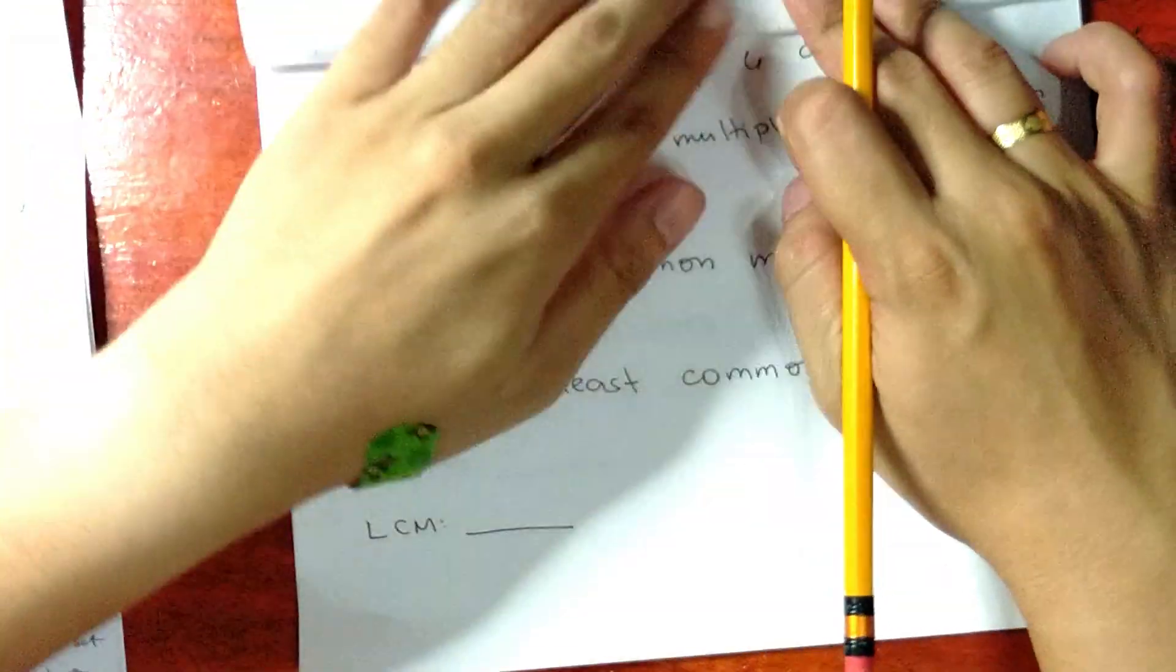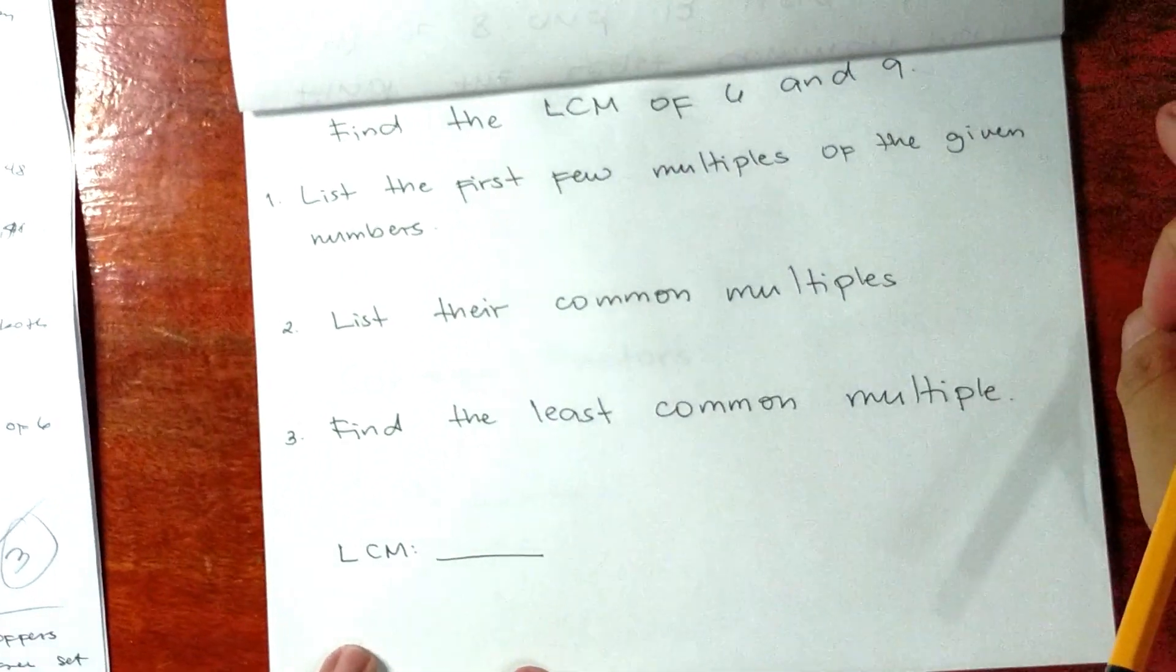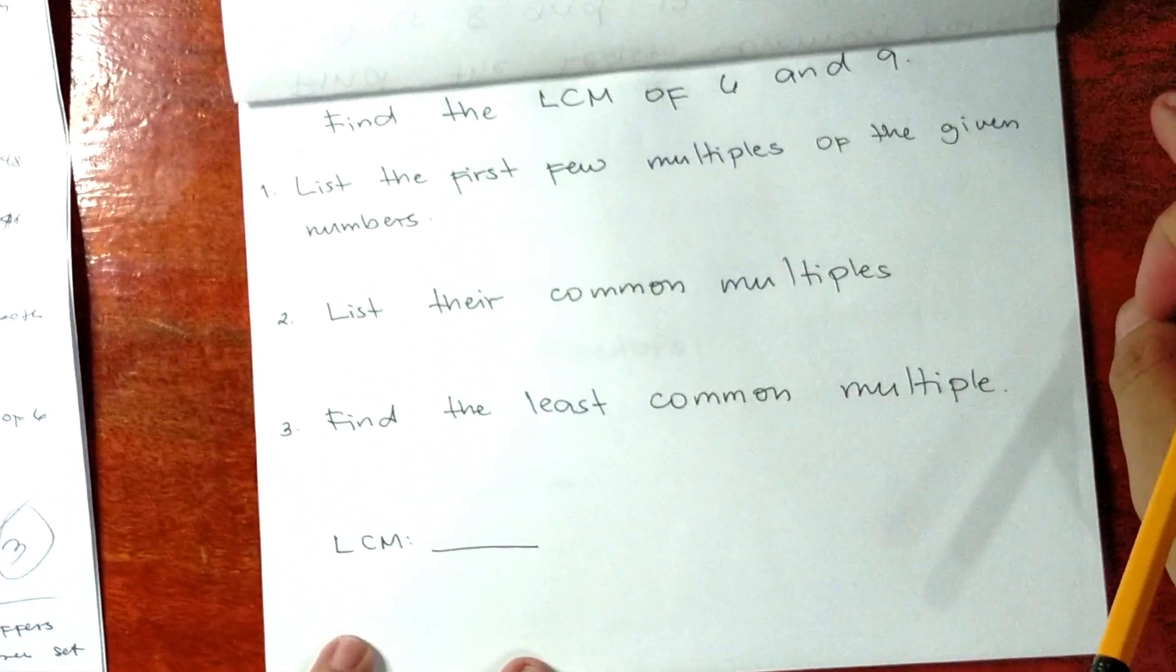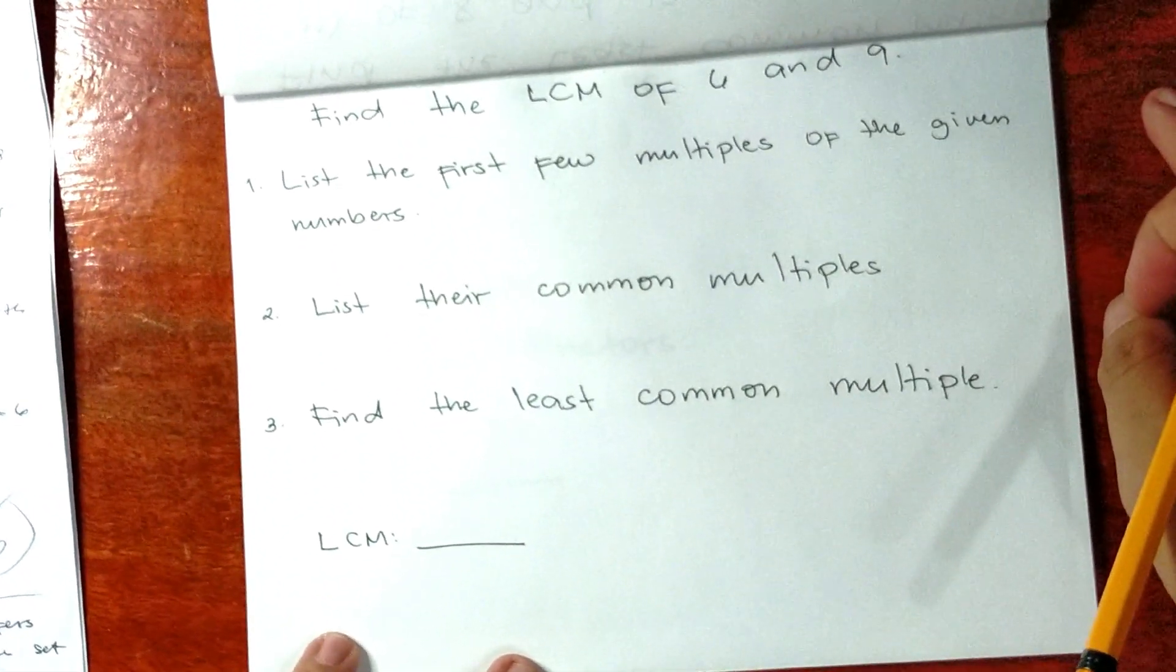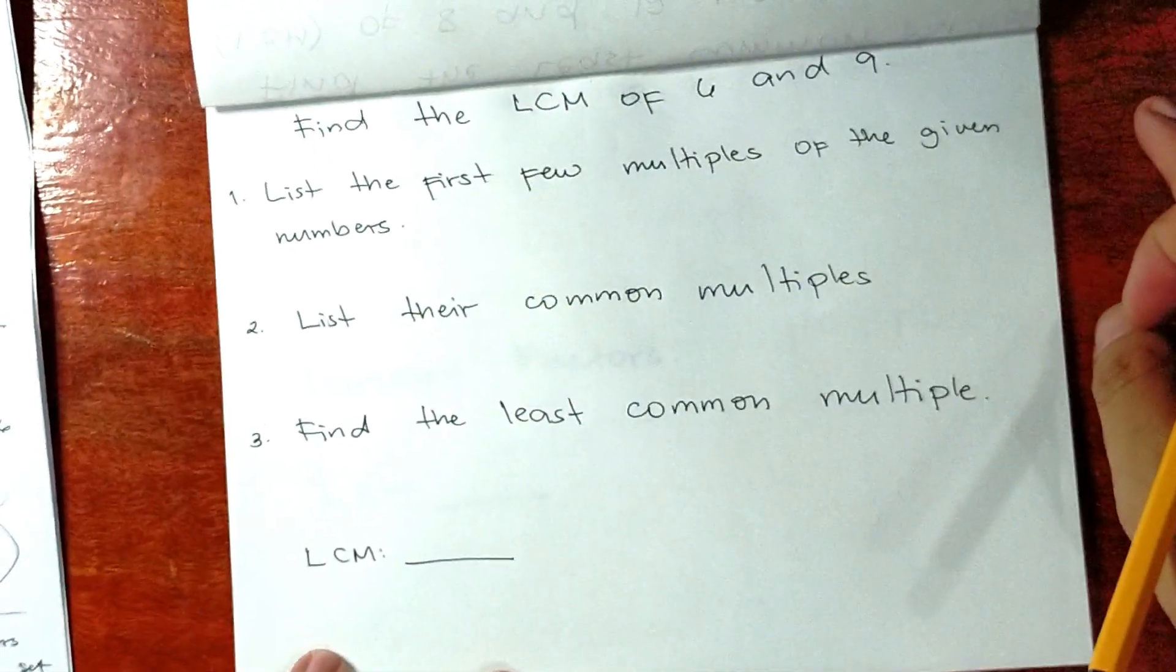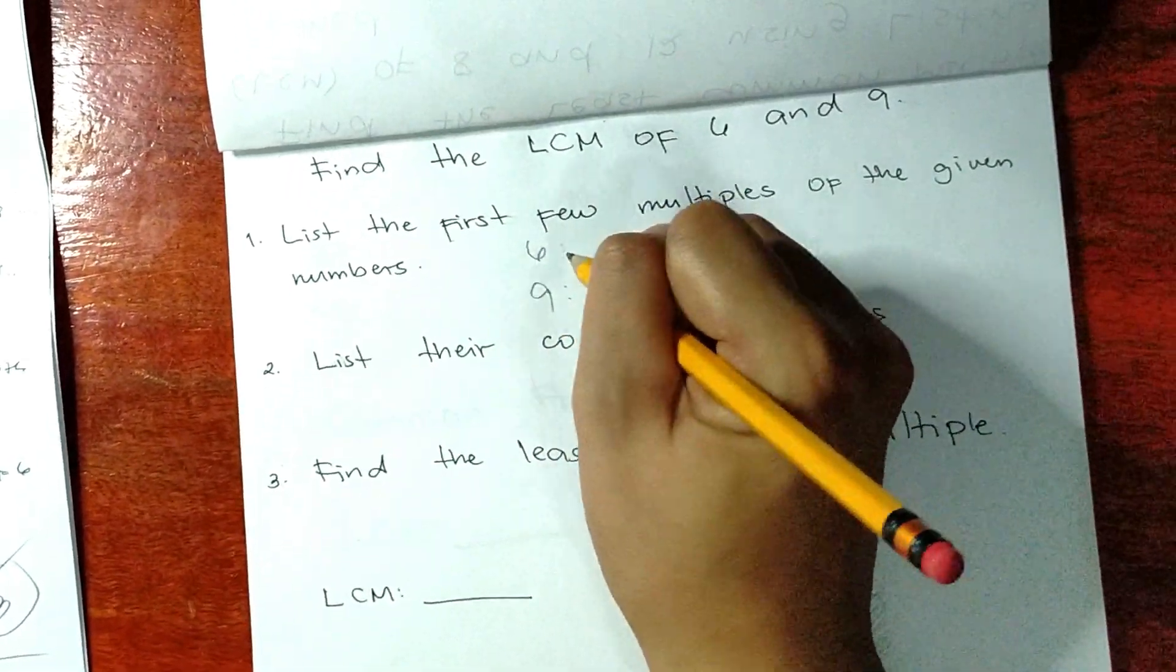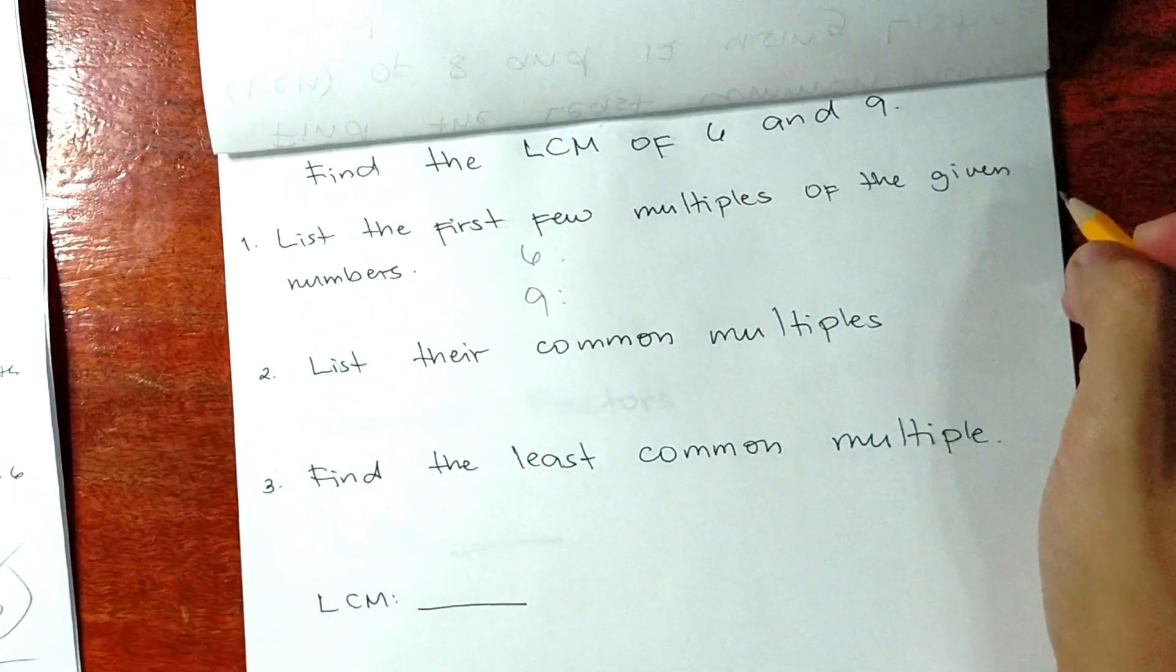Let's have another example. Let's find the LCM of 6 and 9. Step 1: List the first few multiples of the given numbers. Let's start with 6.